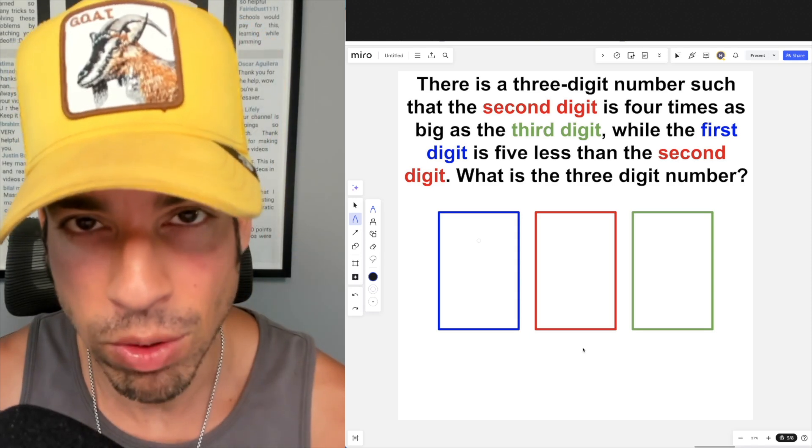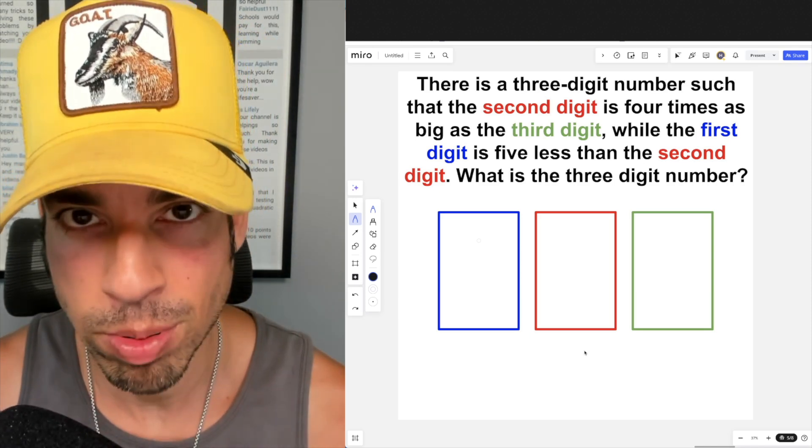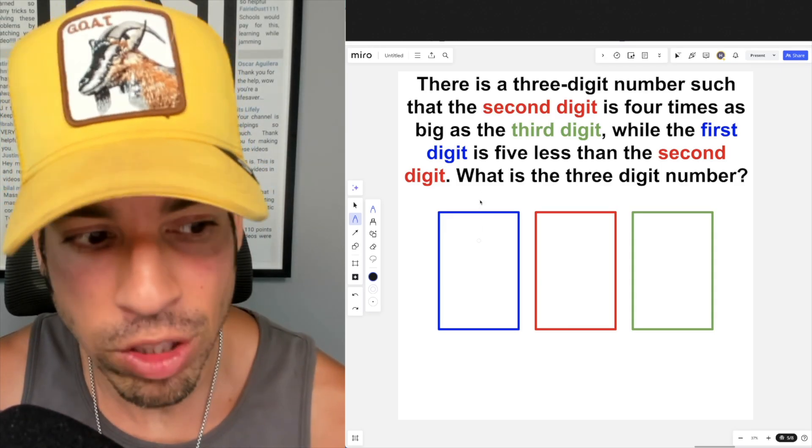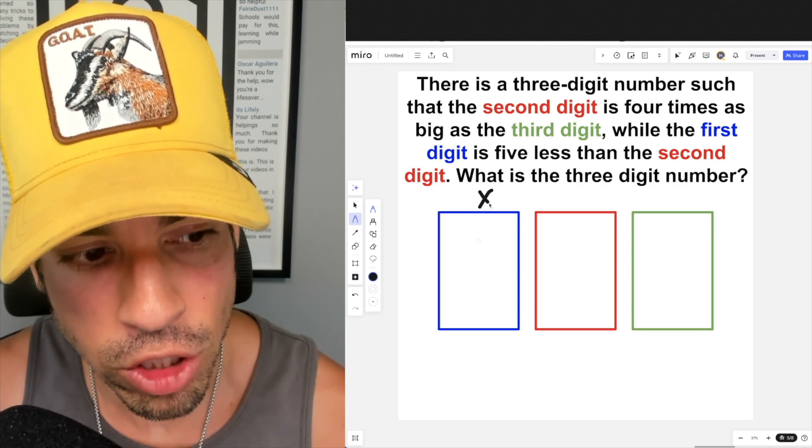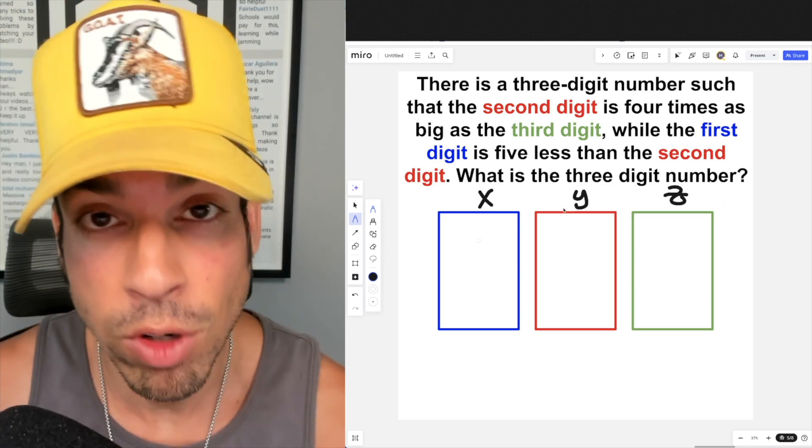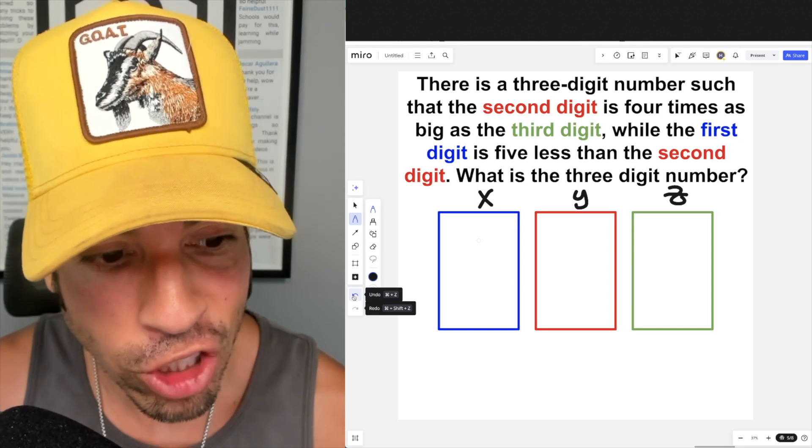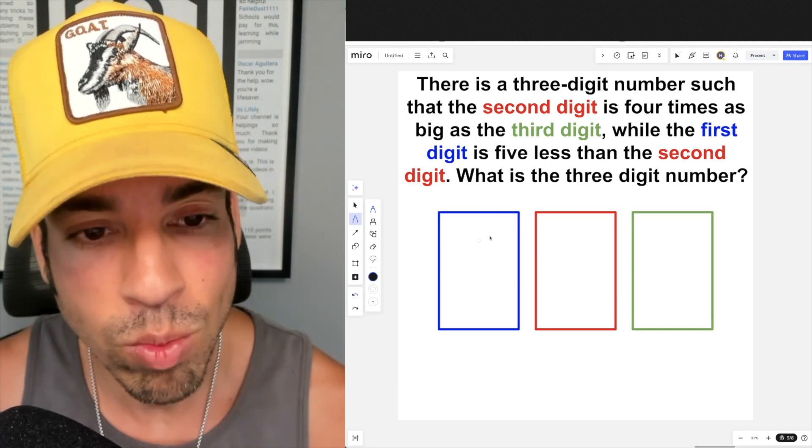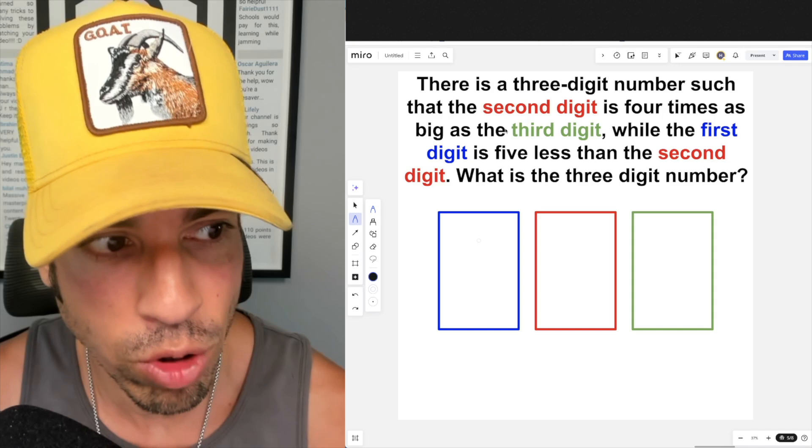When you're ready, hit play and I'll give you the explanation. So with something like this, we could potentially set a variable for the first digit, the second digit, and the third digit and then make some sort of a system of equations. But it might actually be easier in this case to pick digits and see what digits work for this setup.